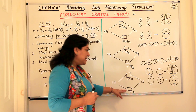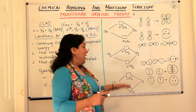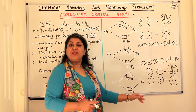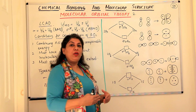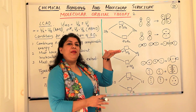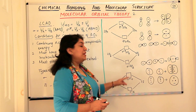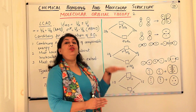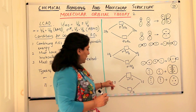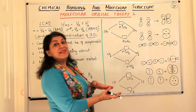The bonding molecular orbital is formed by constructive interference, so the resultant molecular orbital would have energy lower than the atomic orbitals. The anti-bonding molecular orbital results in instability in the molecule, and therefore it would have energy greater than the energy of the atomic orbitals which are combining.